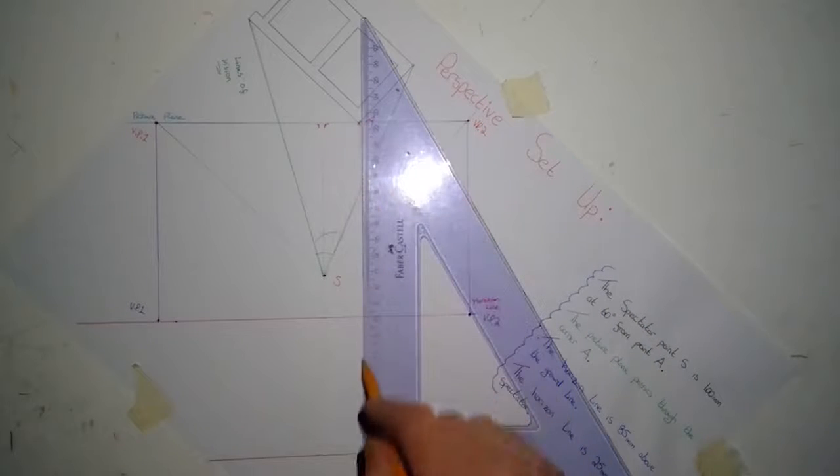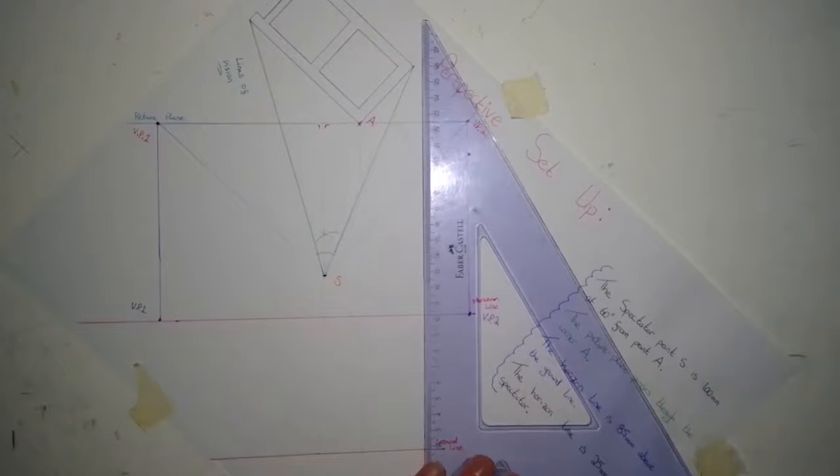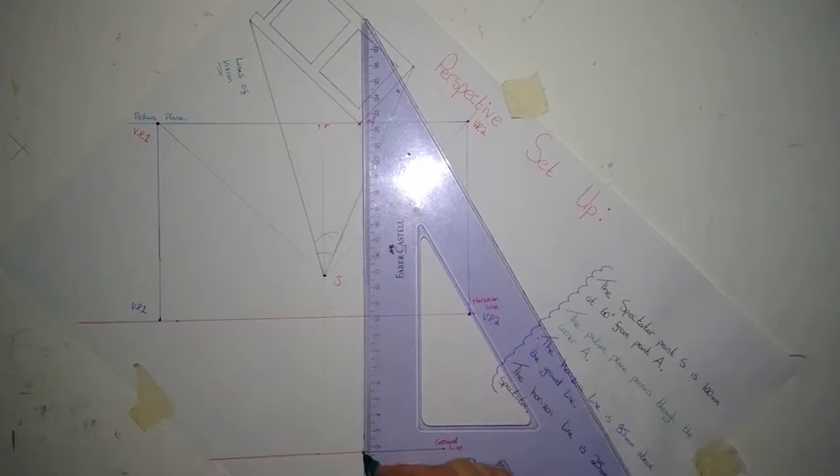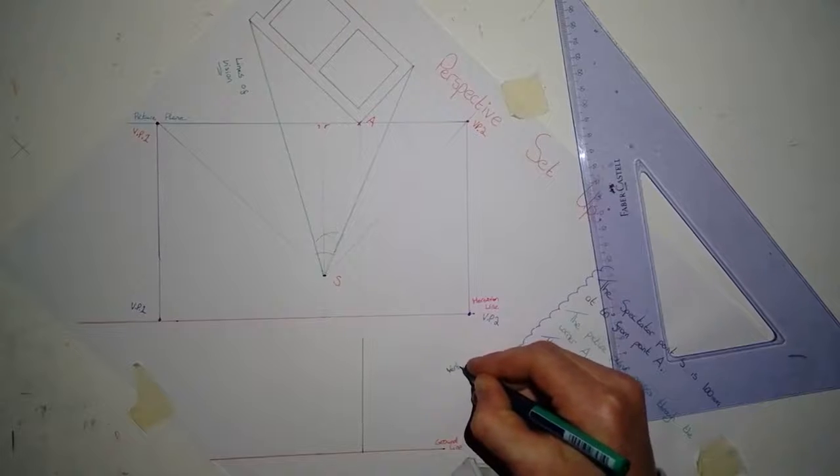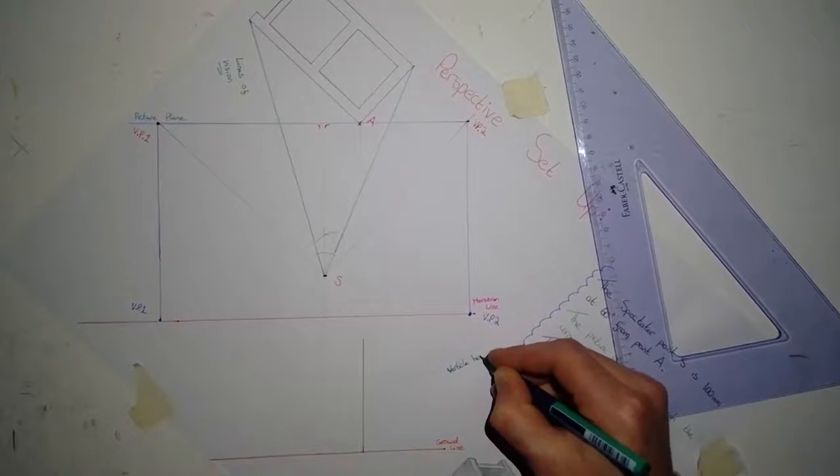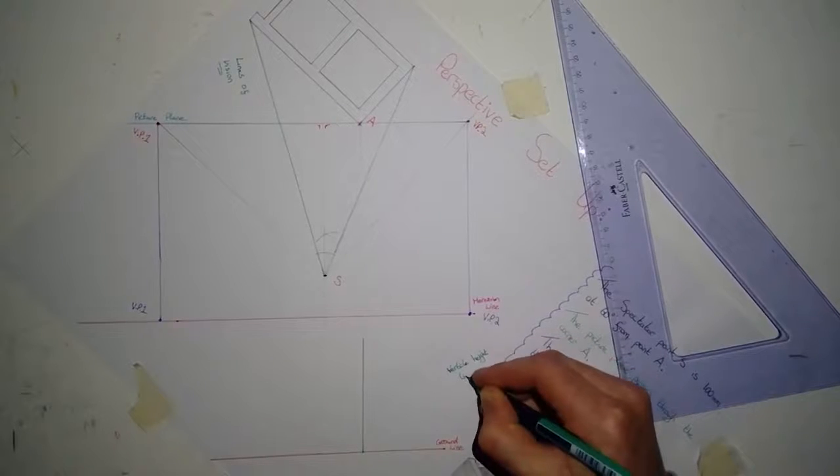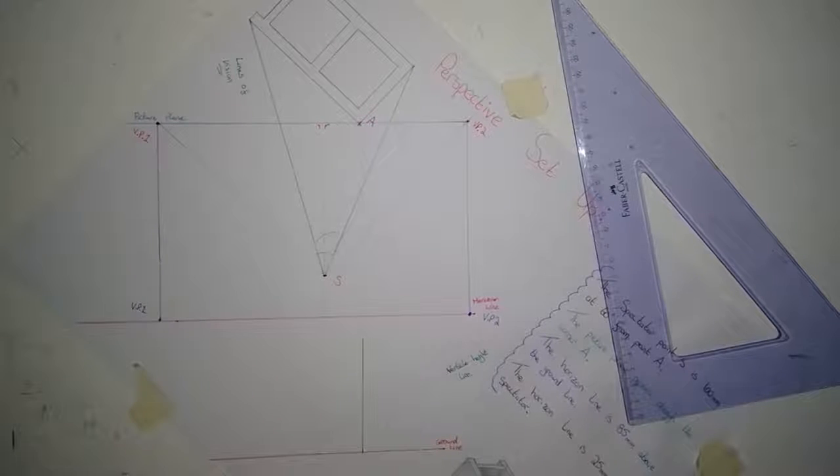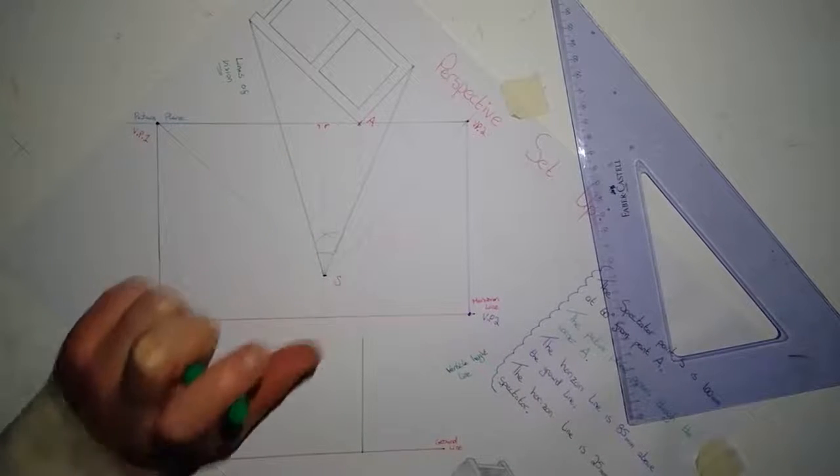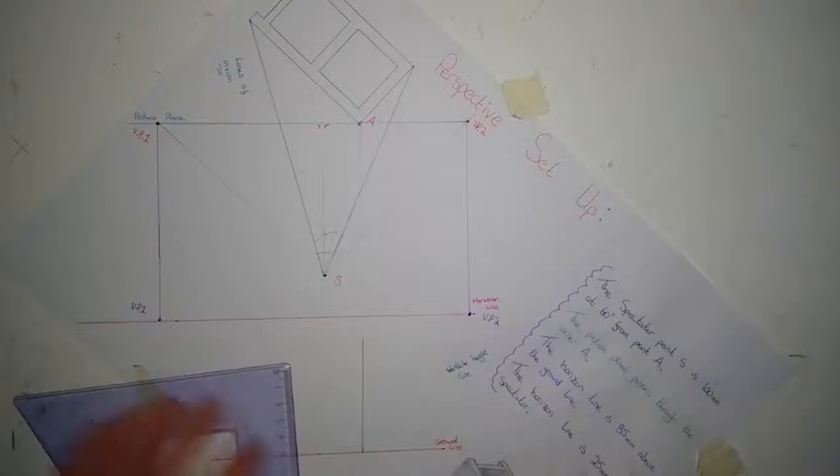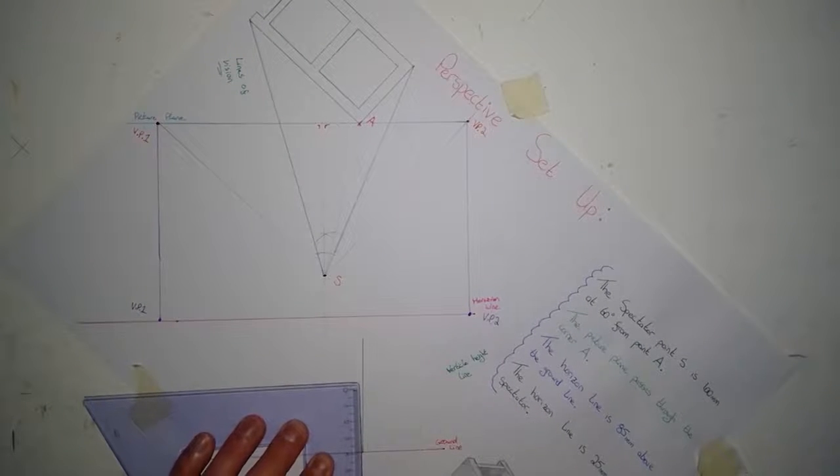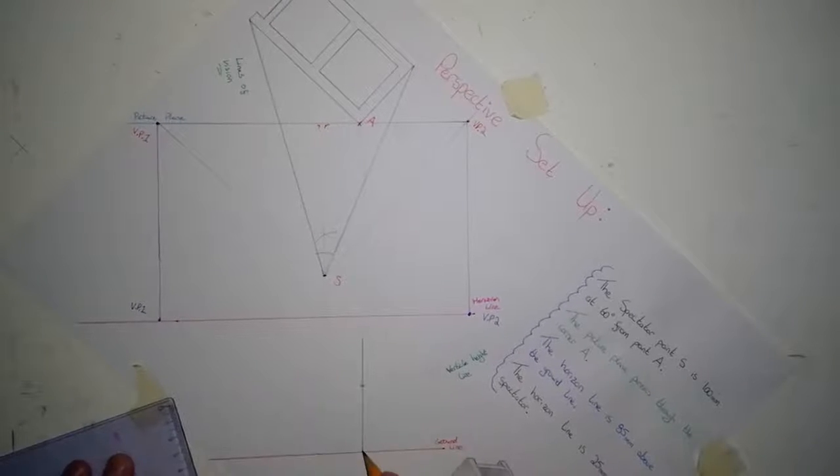Where that line crosses the picture plane, which is at point A because the picture plane crosses through point A, I bring straight down to my ground line. I'll put this line in green. That's my vertical height line. Every vertical height will be measured off on this line. From the question, I know that the vertical height of the block is 40 millimeters, so I can mark zero down here on the ground line and 40 is where that pencil line is.